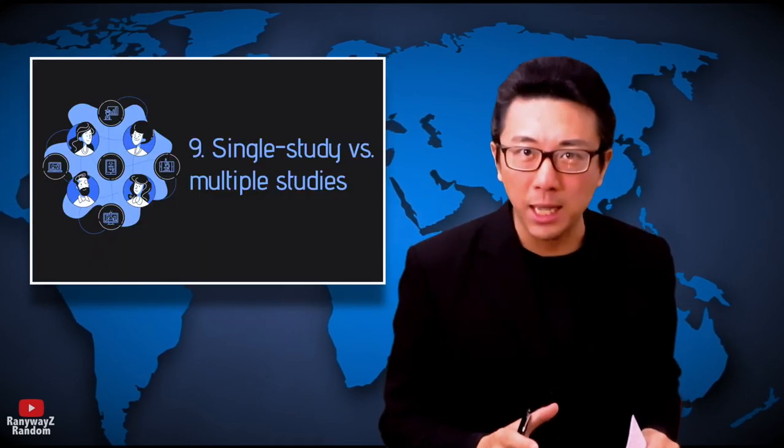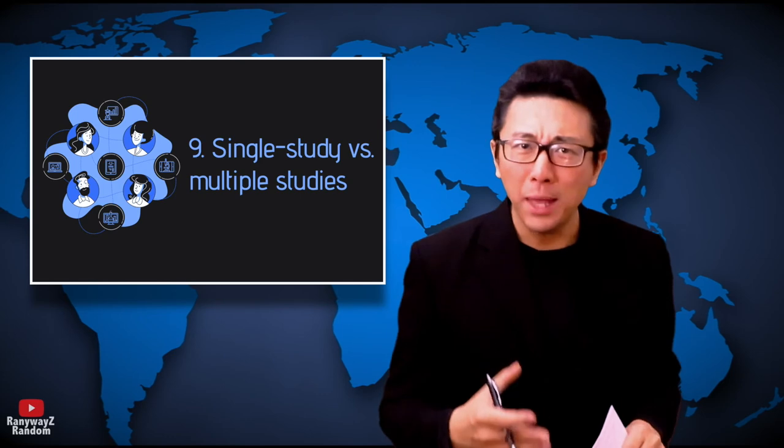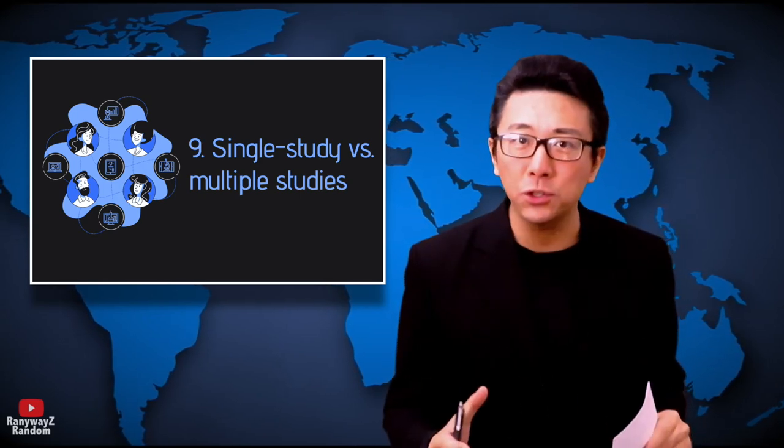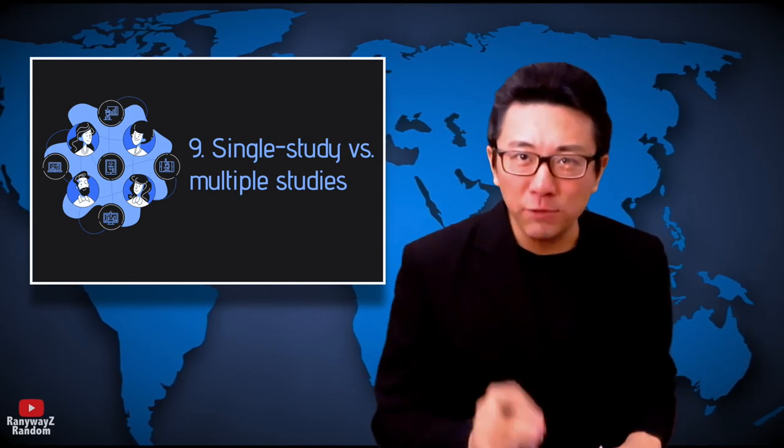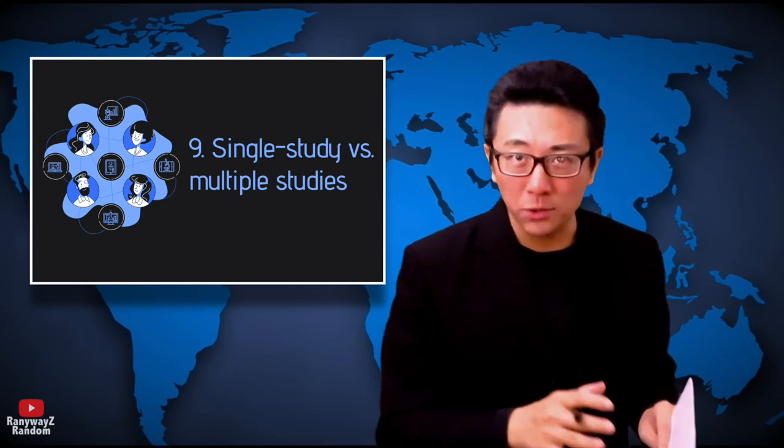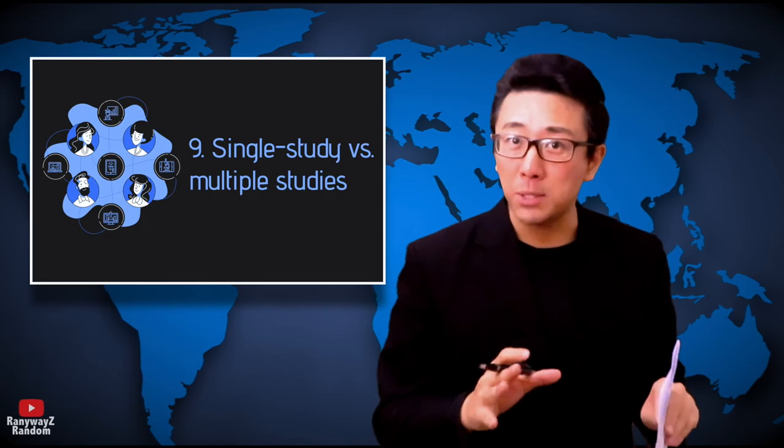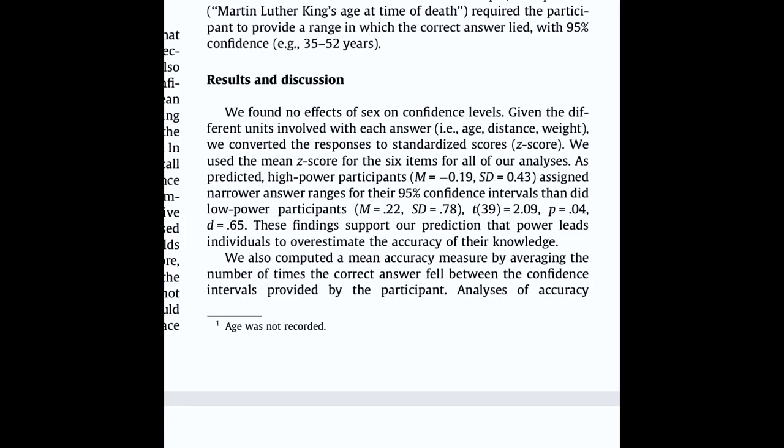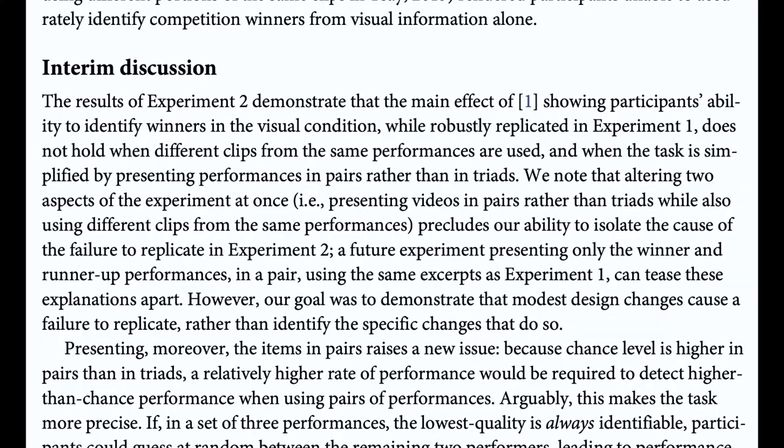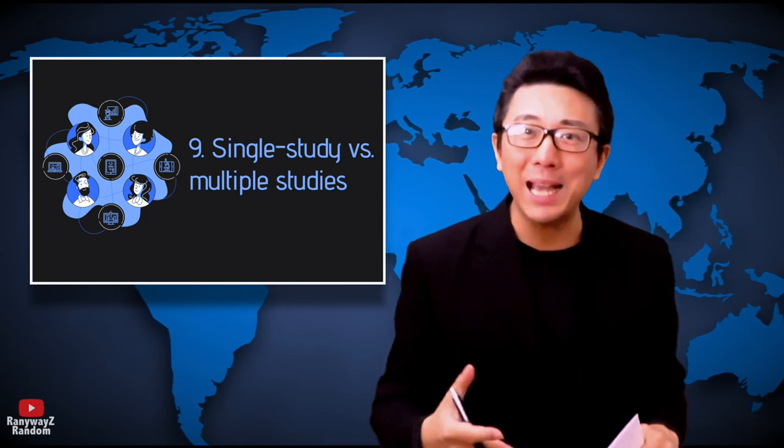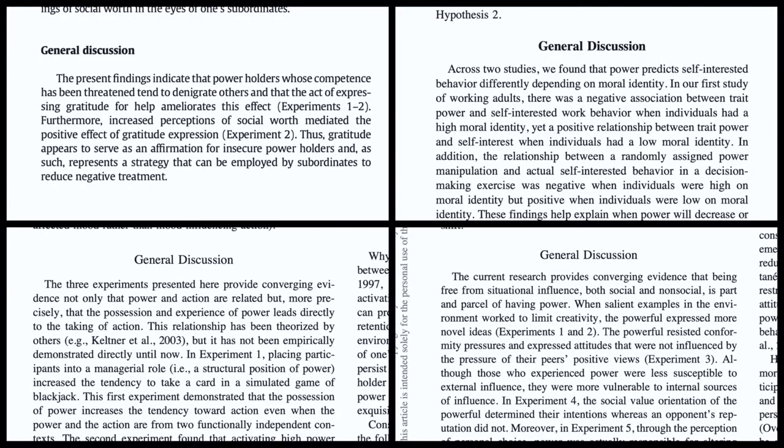In other words, if you have a multiple study design for your paper or dissertation, my opinion is that you absolutely should have an overall general discussion section that stands on its own. For the specific individual studies in your multi-study paper, whether you combine results and discussion is a matter of choice. Sometimes we see just results, sometimes results and discussion, sometimes results on its own and then an interim discussion. No matter how we do it for individual studies, for the paper as a whole, there's always a general discussion section at the end because there's a need for it.